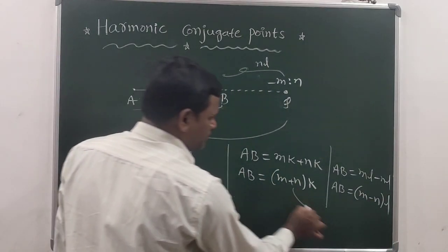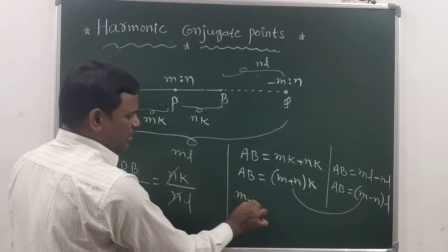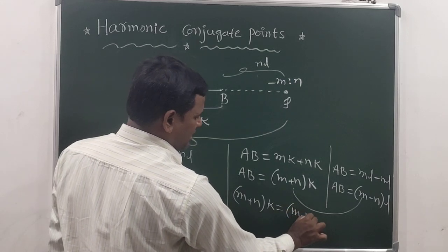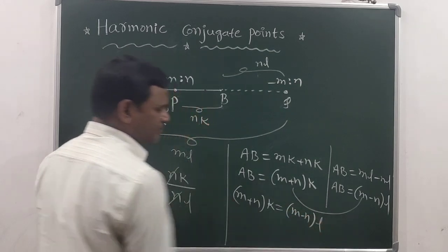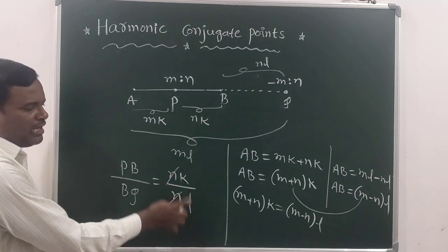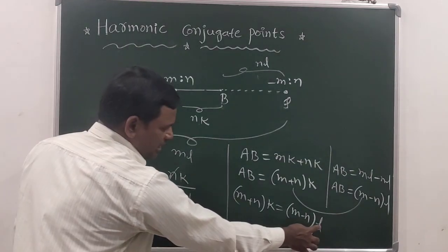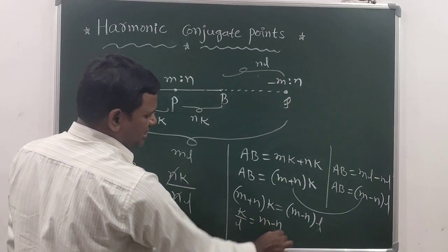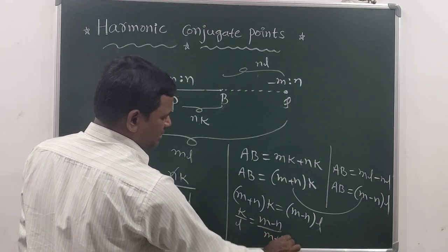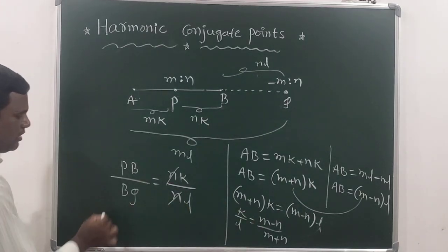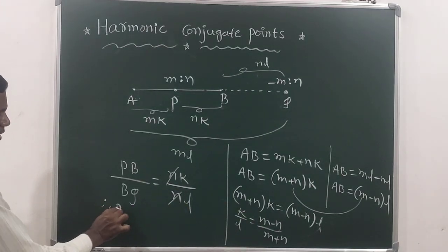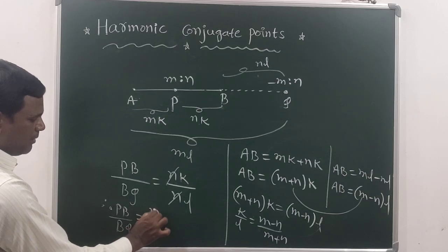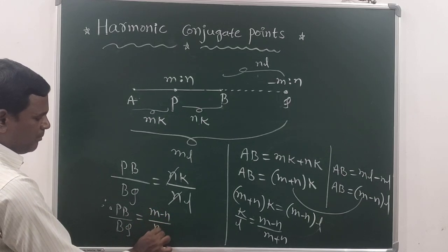Since both expressions equal AB, we have M plus N times k equals M minus N times l. Therefore k by l equals M minus N by M plus N. Substituting back, PB by BQ equals M minus N by M plus N.